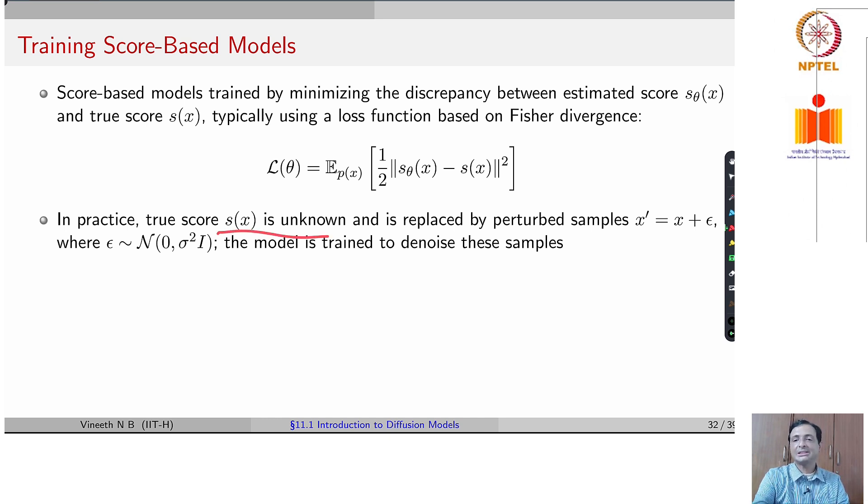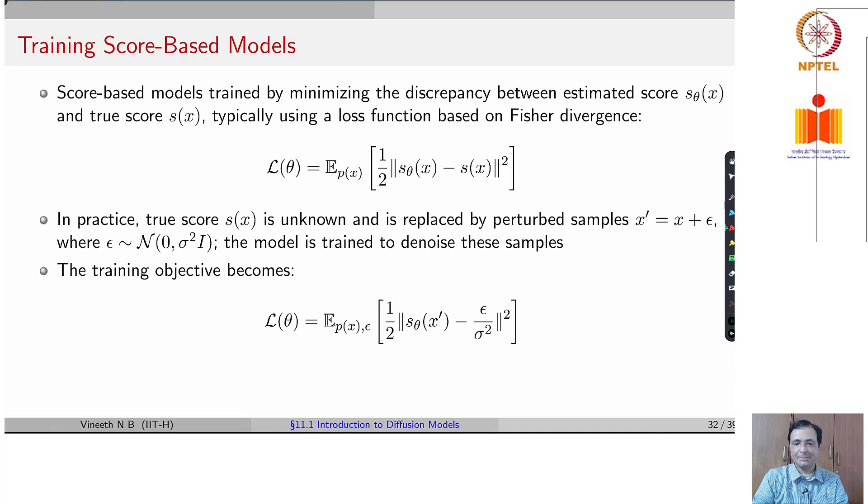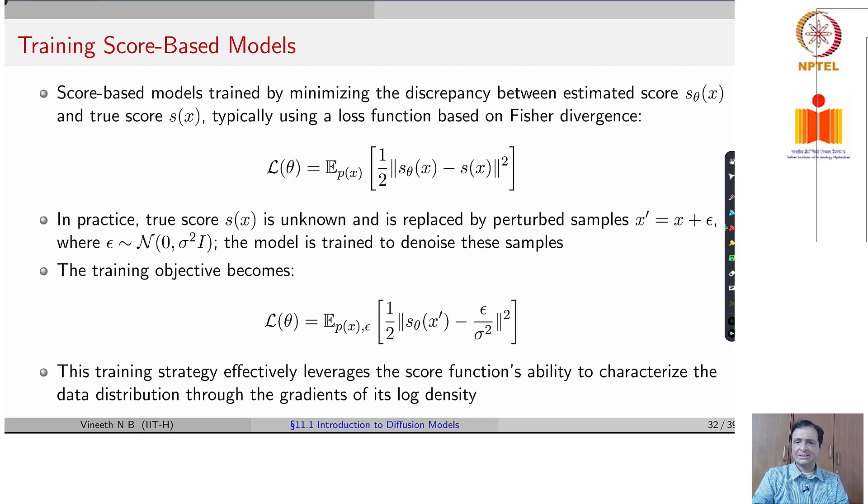In practice, the true score is unknown. So it is replaced by a few perturbed samples which are used to estimate or learn the scoring function s theta of x. This training strategy using this loss function finally leverages the score function's ability to characterize the data distribution through the gradients of its log density.